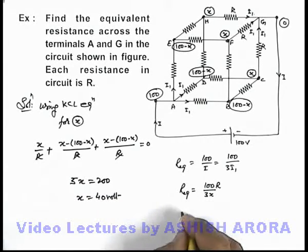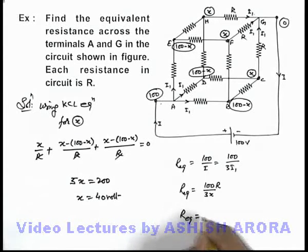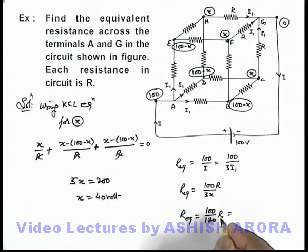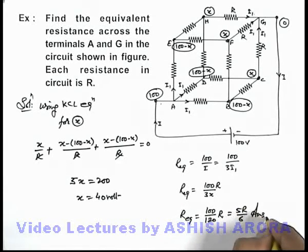If you substitute the value of x here, equivalent resistance across the terminals A and G we can write as 100 divided by 120 by R. This can be written as 5R by 6. That'll be the answer to this problem.